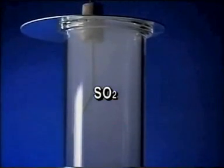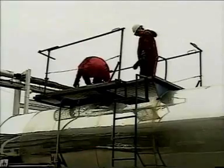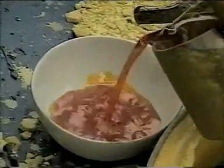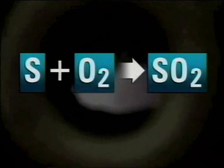When placed in a jar containing pure oxygen, the reaction is much stronger, producing a characteristic blue flame. The white fumes left behind are sulfur dioxide, and this reaction is the starting point for making sulfuric acid. At the factory, liquid sulfur arrives in a huge tanker, is sprayed into a furnace and burned in a blast of dry air, where it combines with oxygen to form sulfur dioxide.